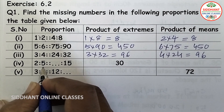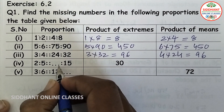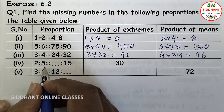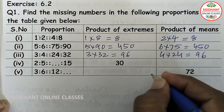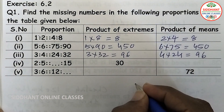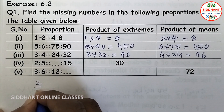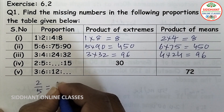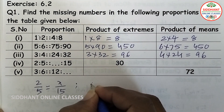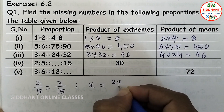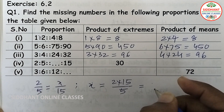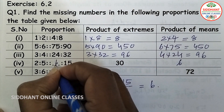Fourth proportion: 2 is to 5 and x is to 15. The product of extremes is given as 30, and we need to find x. Setting up: 2 by 5 equals x by 15, so x equals 2 into 15 divided by 5, which gives x equals 6.